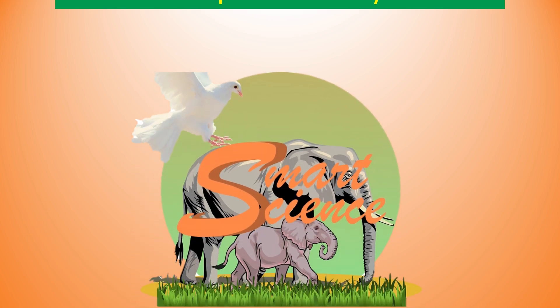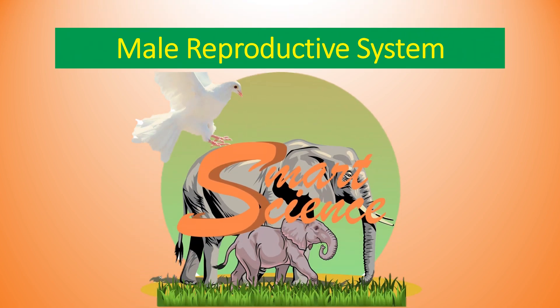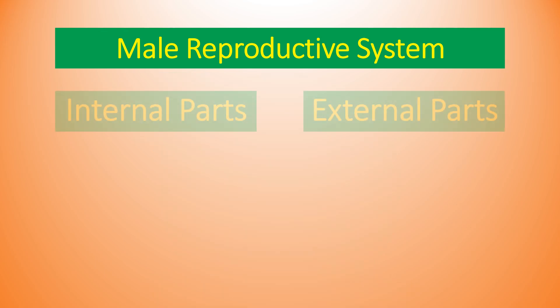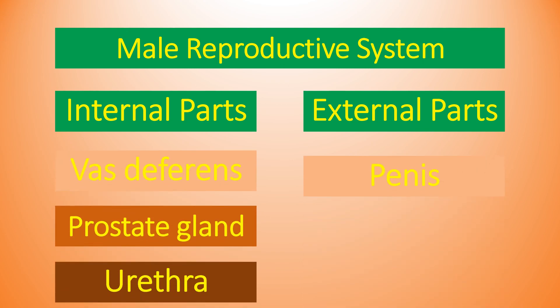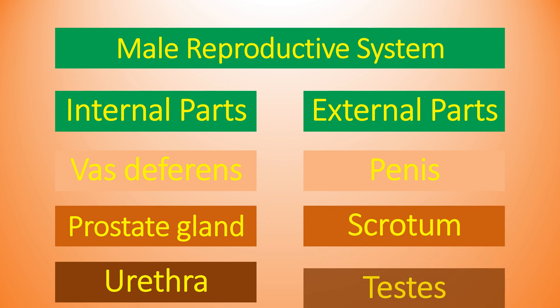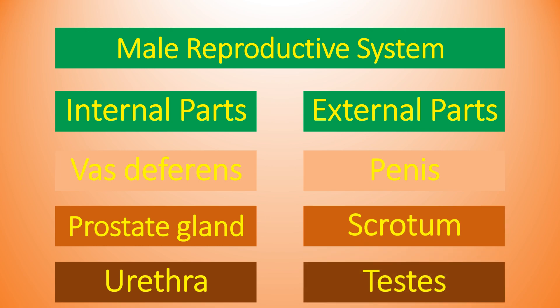Welcome to my channel Smart Science. The male reproductive system consists of both internal and external parts. Internal parts consist of vas deferens, prostate gland, and urethra. External parts include penis and scrotum.